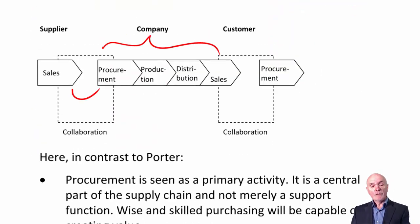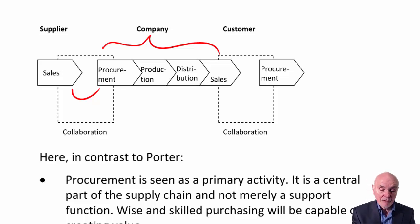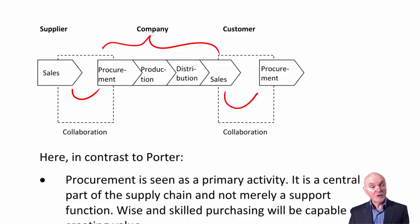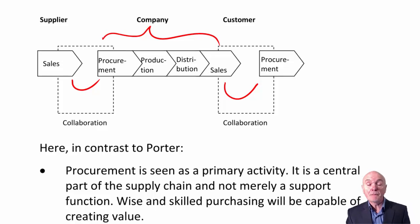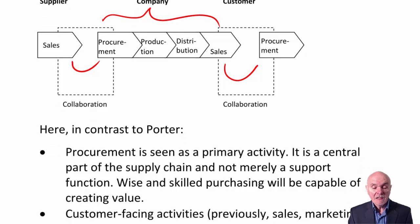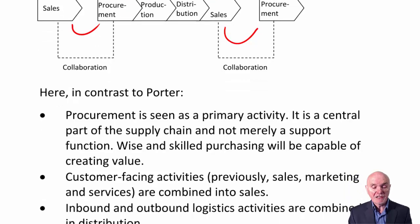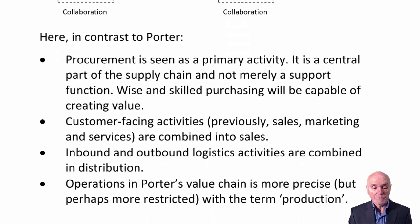Getting back to this diagram, when we're selling, we are liaising with the next people in the chain — really the procurement or purchasing department of our customers. Here, procurement is seen as a primary activity — it is central to the supply chain.